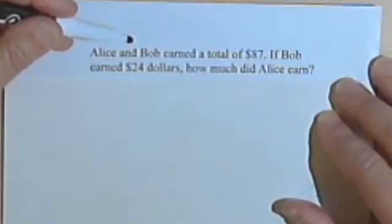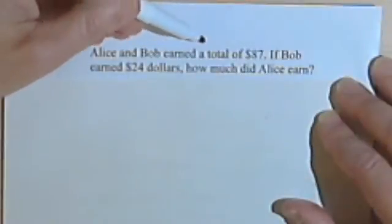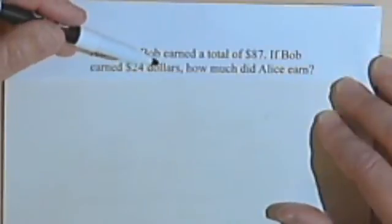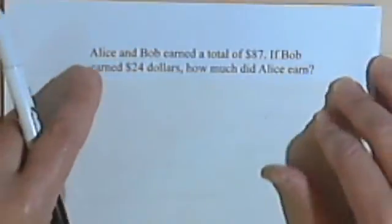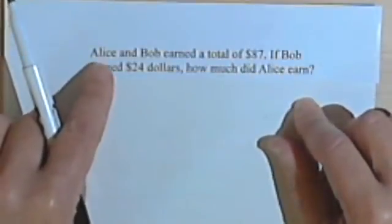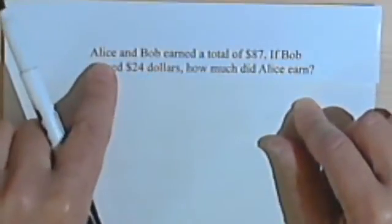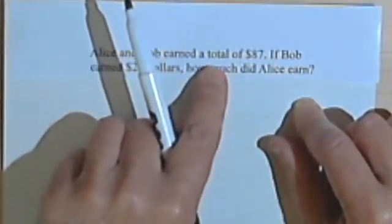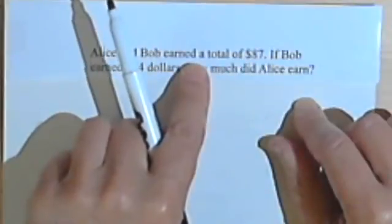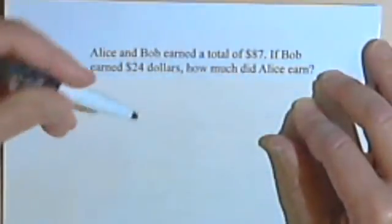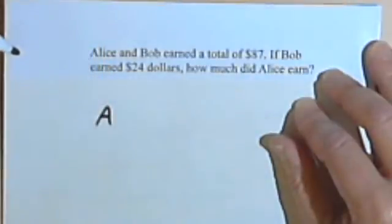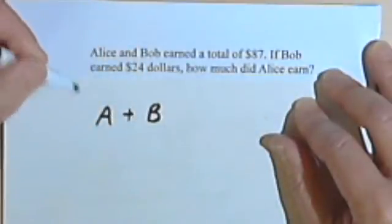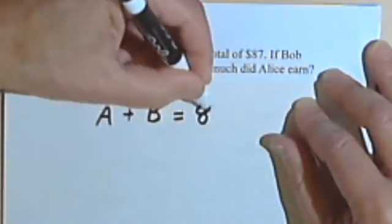Okay, this one tells us that Alice and Bob earned a total of $87. If Bob earned $24, how much did Alice earn? Okay, so what it's telling me in this first sentence is that the two amounts, the amount that Alice earned plus the amount that Bob earned, added together, totaled $87. So I'm gonna say that A is the amount that Alice earned and B is the amount that Bob earned. And when I add these two together, I get $87.